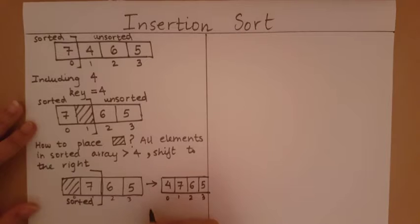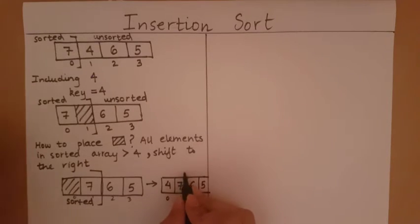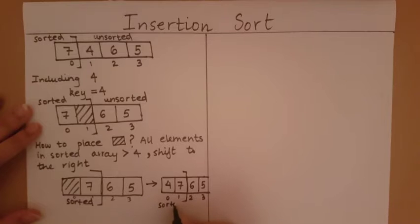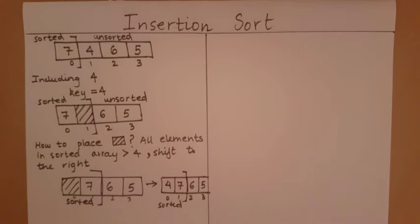After filling the space, four and seven form our sorted array, and the rest — six and five — remain part of the unsorted array.